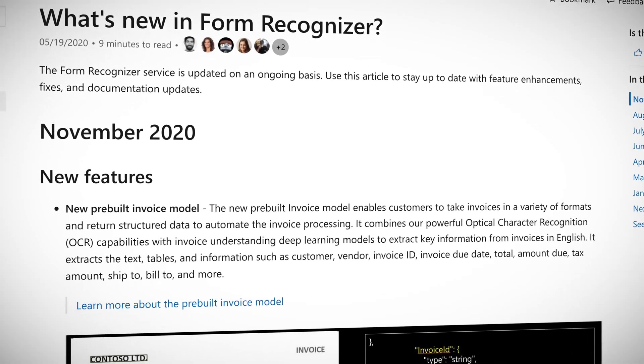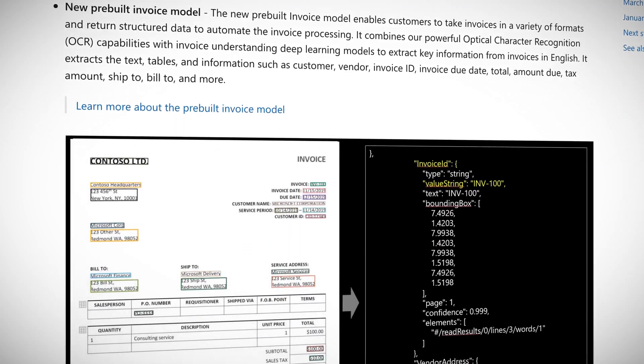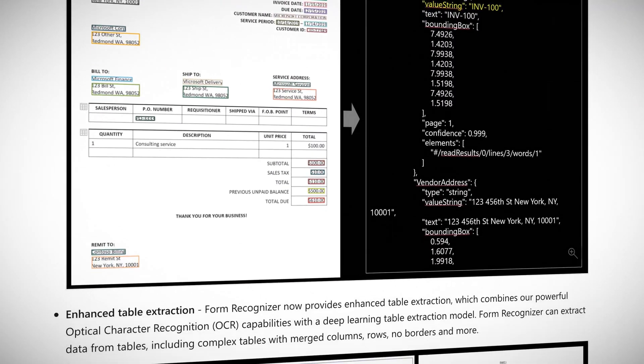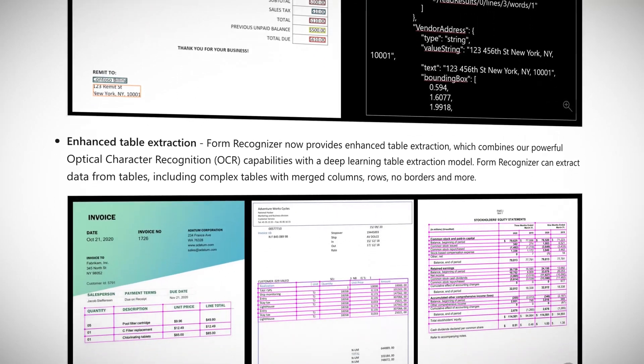New features announced this week include invoice extract and complex tables extract methods. The new prebuilt invoice model enables customers to take invoices in a variety of formats and return structured data to automate invoice processing. Using a mix of optical character recognition (OCR) and machine learning, Azure Form Recognizer can extract key information from your invoices. Additionally, updates to the client libraries for .NET, Python, Java, and JavaScript have also been released.